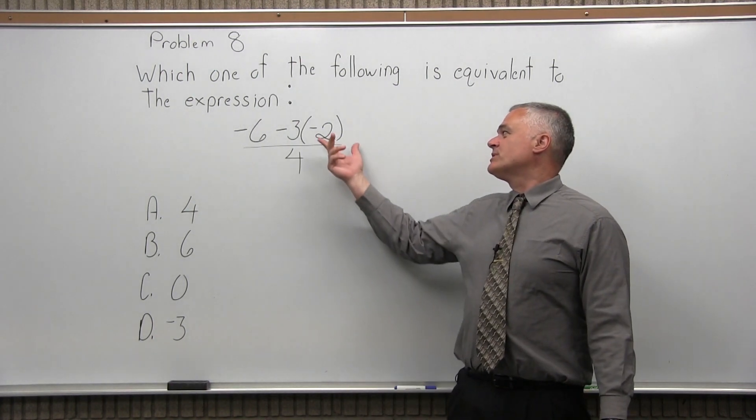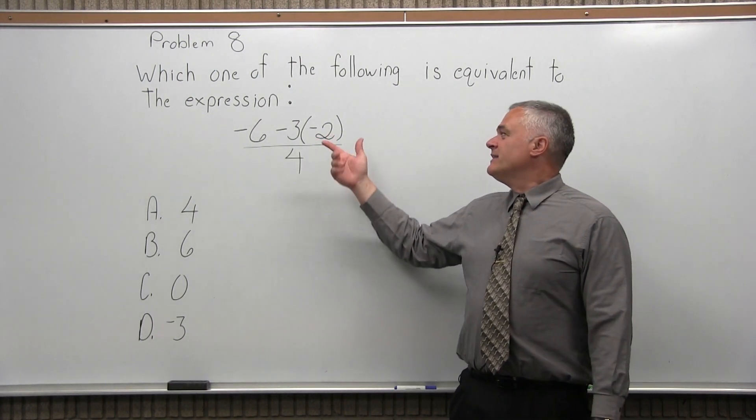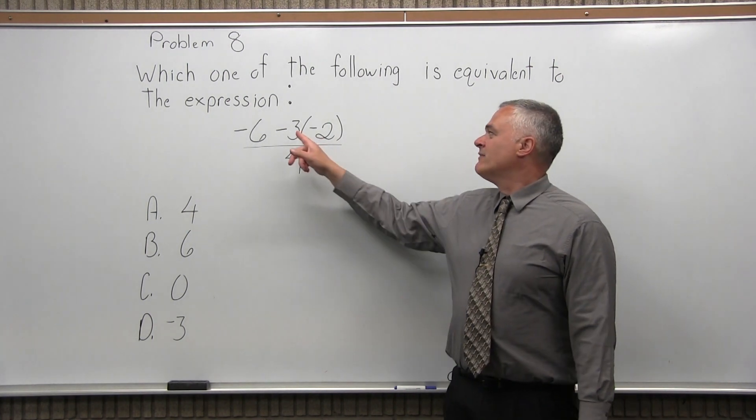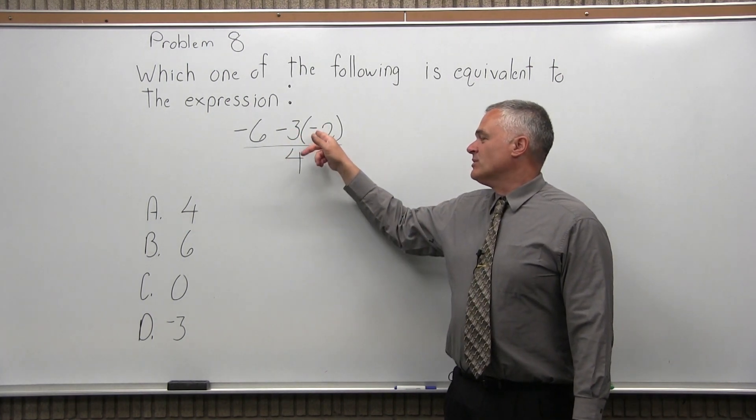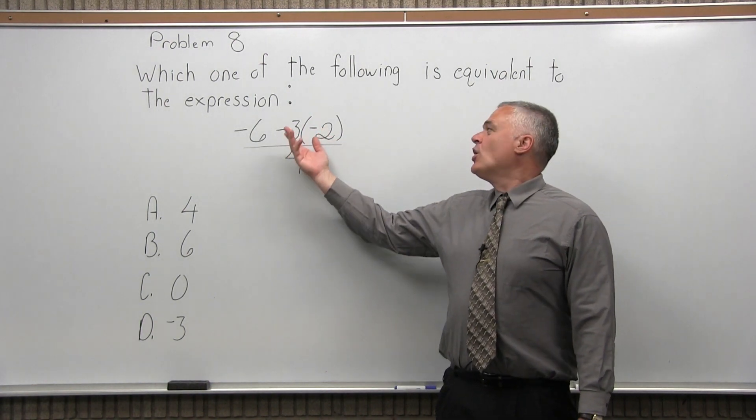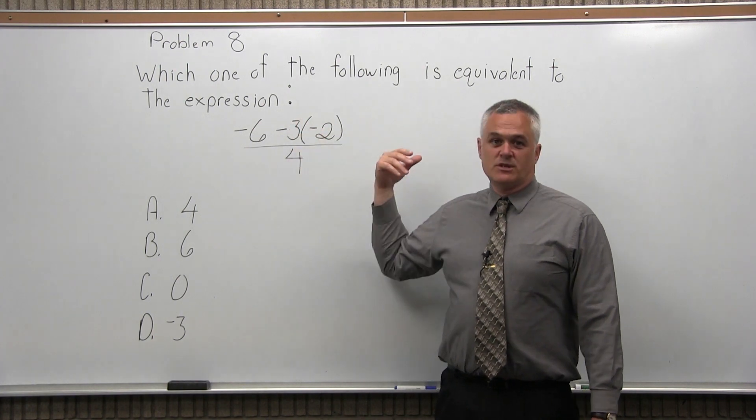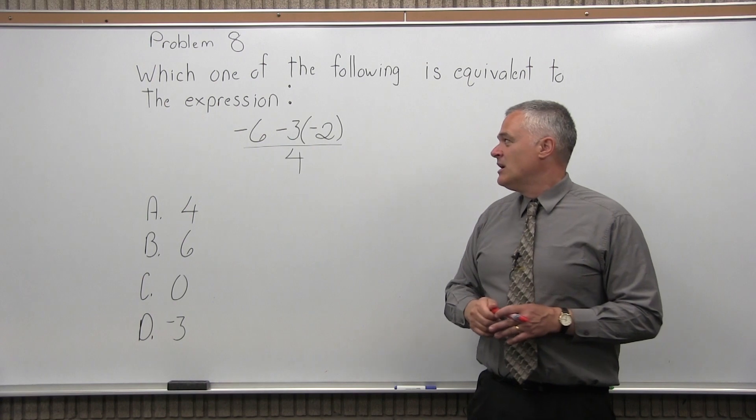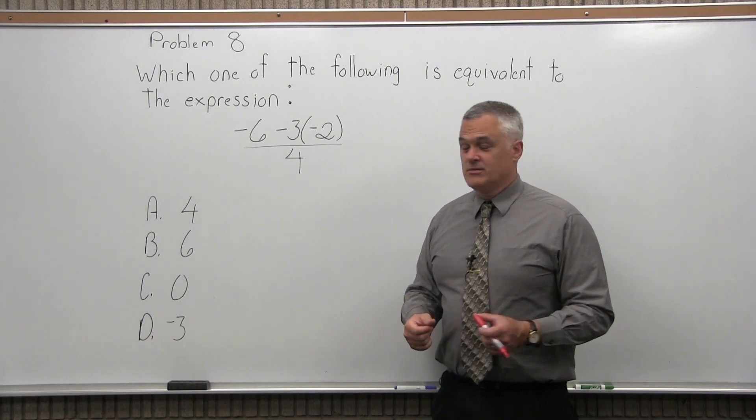So first of all, what do the parentheses around the negative 2 really mean? That's a way of indicating that they want you to do a multiplication. So you have 3 times negative 2. Now the other question is, does this 3 in front count as a negative 3, or is it a positive 3 and then you subtract the answer? The answer is you should be able to consider it either way, and you should get the same answer.